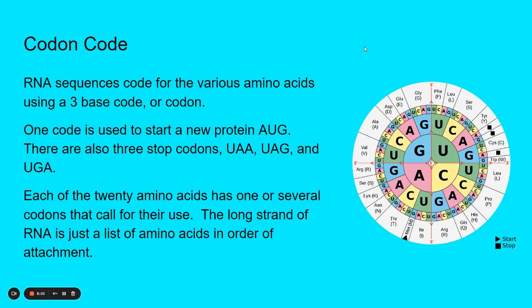Now, how does it know which amino acid to grab? Well, RNA is sequenced in a code called a codon. Each set of three bases is one codon and it signals for an amino acid. There's one codon that is called the start codon, and that's AUG — it means a new protein starts here. There are also three stop codons: UAA, UAG, and UGA. These codons tell the mechanism that we're done, we don't need to keep going anymore — the protein's complete.